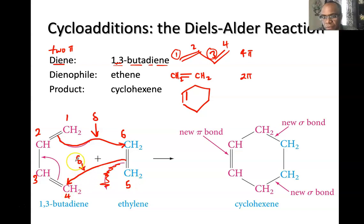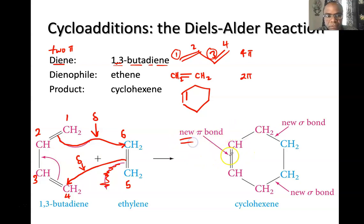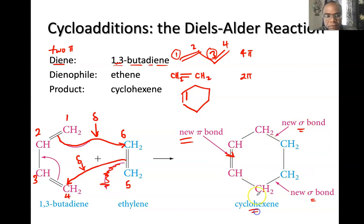You are connecting carbon one to six with one sigma bond, and carbon five to four with another sigma bond, and forming a new pi bond between carbons two and three. So you get two new sigma bonds, one new pi bond, and a six-membered ring called cyclohexene.